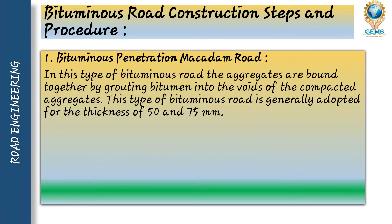Next is bituminous road construction steps and procedure. First is bituminous penetration macadam road. In this type of bituminous road, the aggregates are bounded together by grouting bitumen into the voids of compacted aggregate. This type of bituminous road is generally adopted for a thickness of 50 to 75 mm. After rolling of the roller on coarse aggregate, there will be many voids, and those voids will be sealed by the bitumen.